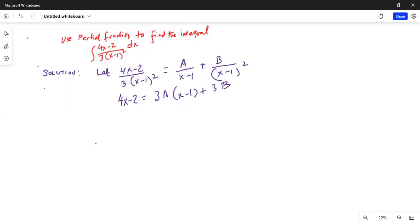Now, in order to solve for A and B, first step we will do: let x equal to 1. We will have 4 times 1 minus 2. When x is 1, x minus 1 is 0, so this term disappears, the A term disappears, I am left with 3B.